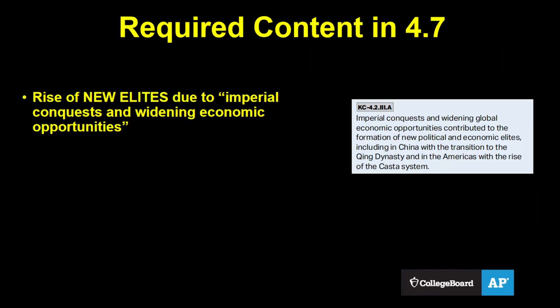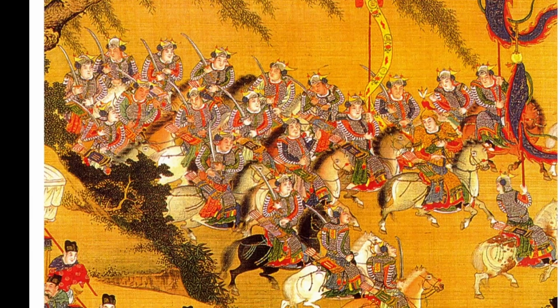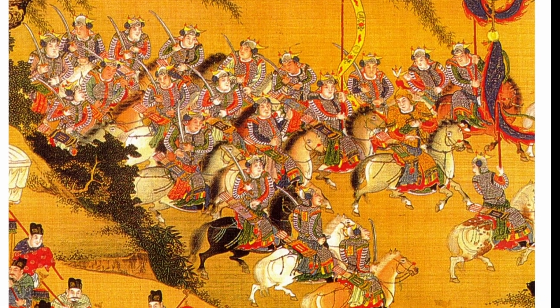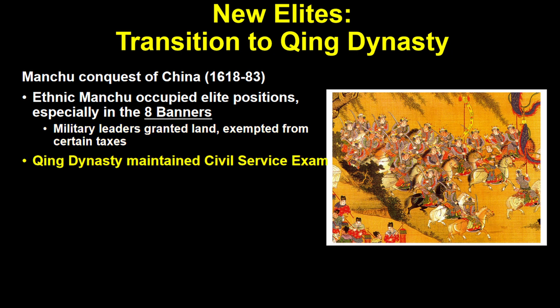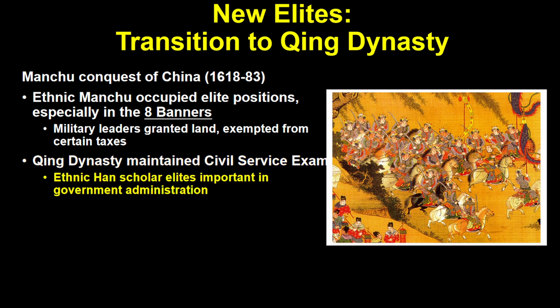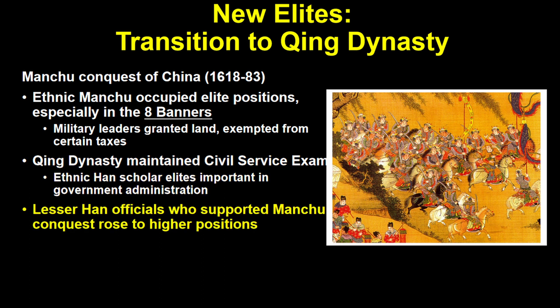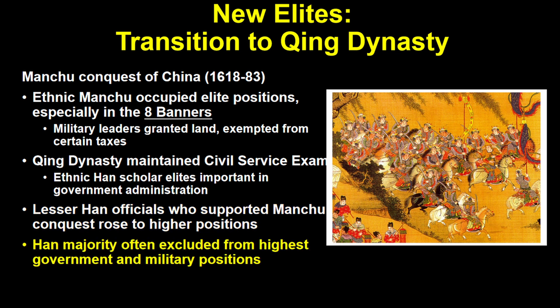This section covers the rise of new political and economic elites in 1450–1750 due to imperial expansion and economic opportunities. The first required example is the transition to the Qing dynasty in China. The ethnic Manchu who conquered China occupied a new elite, particularly the members of the Eight Banners — military leaders granted significant land and exempted from certain taxes. But the Qing also maintained the civil service exam, and Han scholar elites remained important in government administration. Many lesser Han officials who supported the Manchu conquest rose to higher positions, while the Han majority were often excluded from the highest government and military positions.